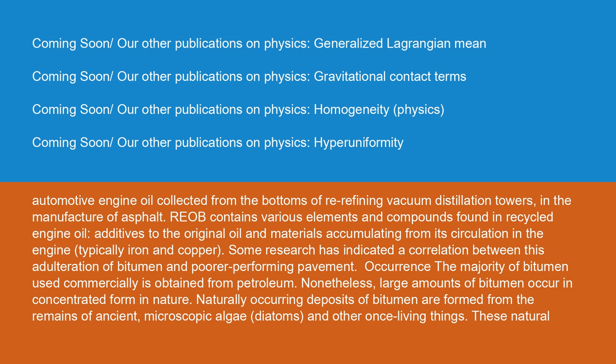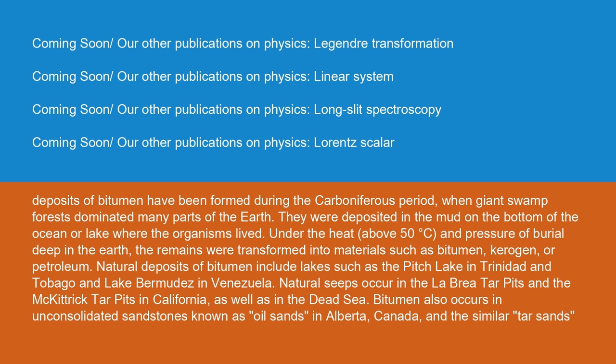The majority of bitumen used commercially is obtained from petroleum. Nonetheless, large amounts of bitumen occur in concentrated form in nature. Naturally occurring deposits of bitumen are formed from the remains of ancient microscopic algae, diatoms, and other once-living things. These natural deposits of bitumen were formed during the Carboniferous period, when giant swamp forests dominated many parts of the earth. They were deposited in the mud on the bottom of the ocean or lake where the organisms lived. Under heat above 50°C and pressure of burial deep in the earth, the remains were transformed into materials such as bitumen, kerogen, or petroleum.